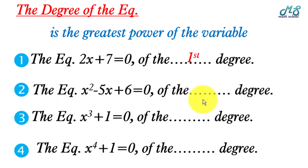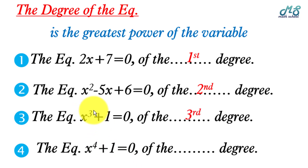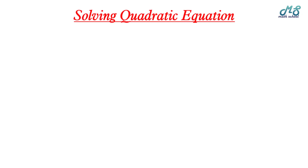Number two: the equation x squared minus 5x plus 6 equals zero — the greatest power is two, so it is an equation of the second degree. Number three: x cubed plus 1 equals zero is of the third degree. Finally, x raised to the power four plus 1 equals zero is of the fourth degree, because the greatest power is four.